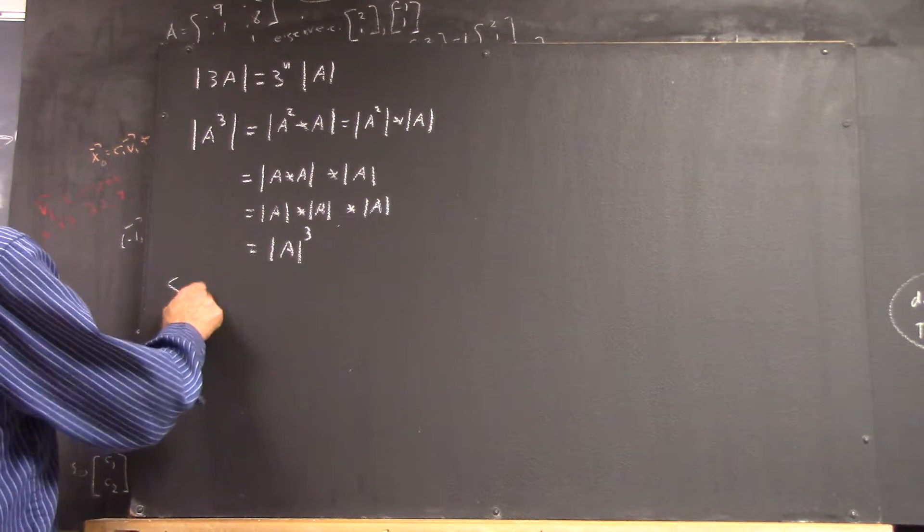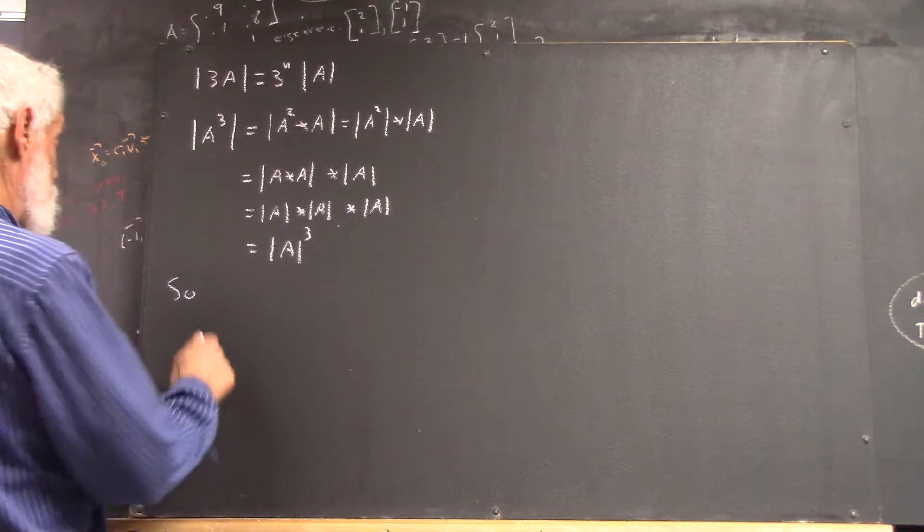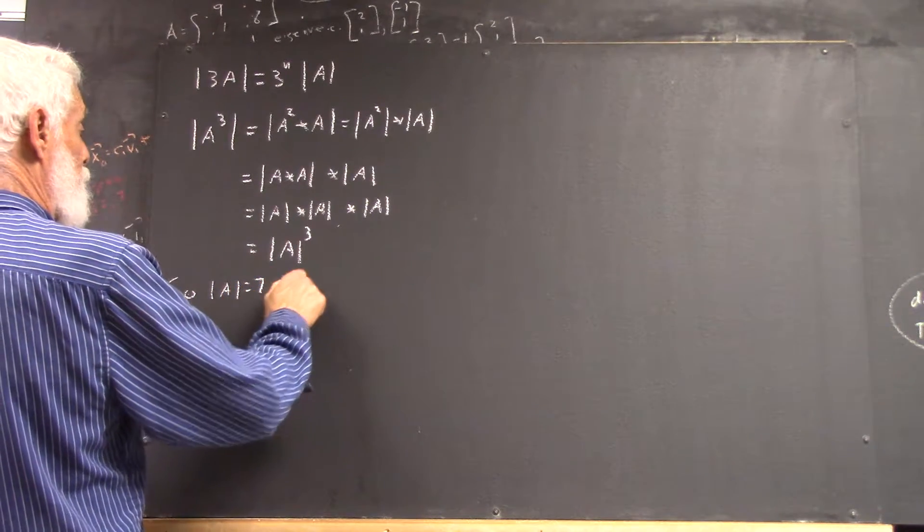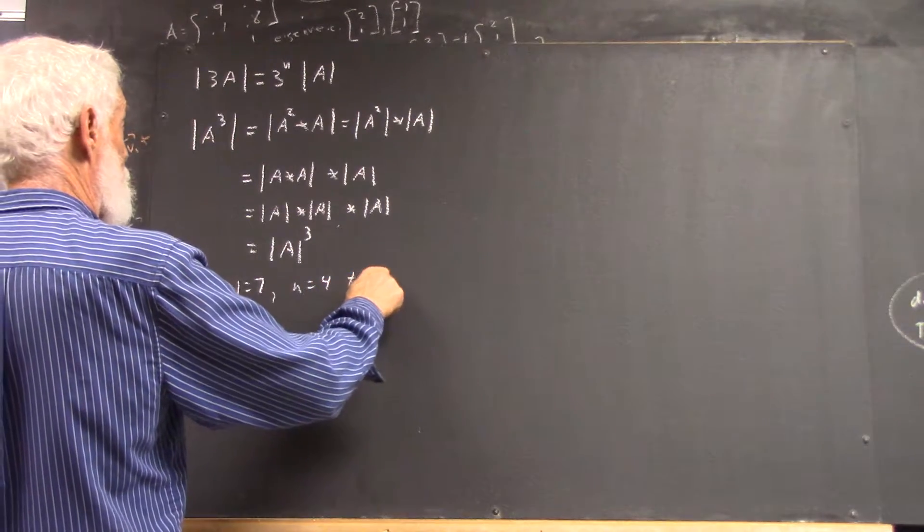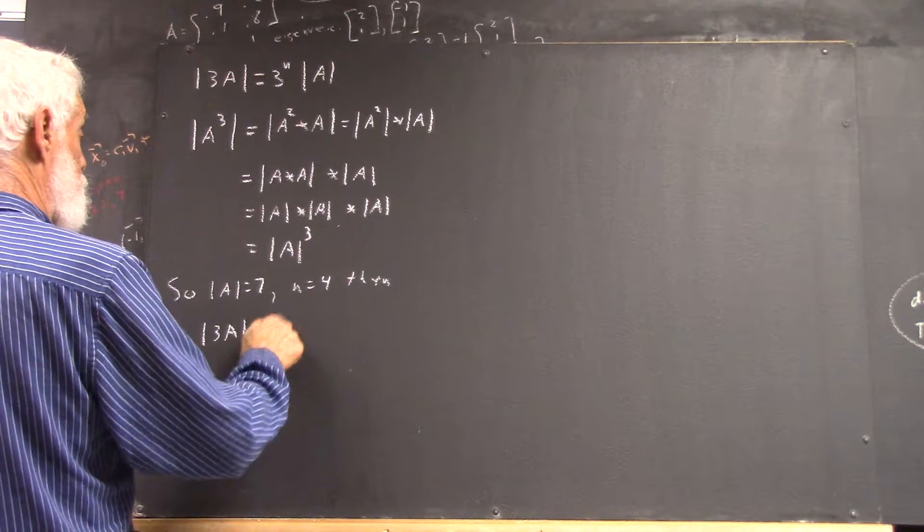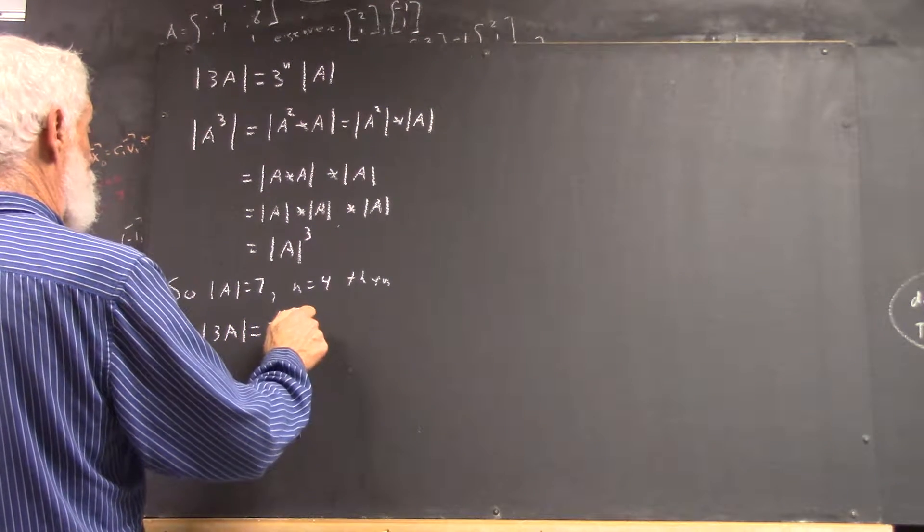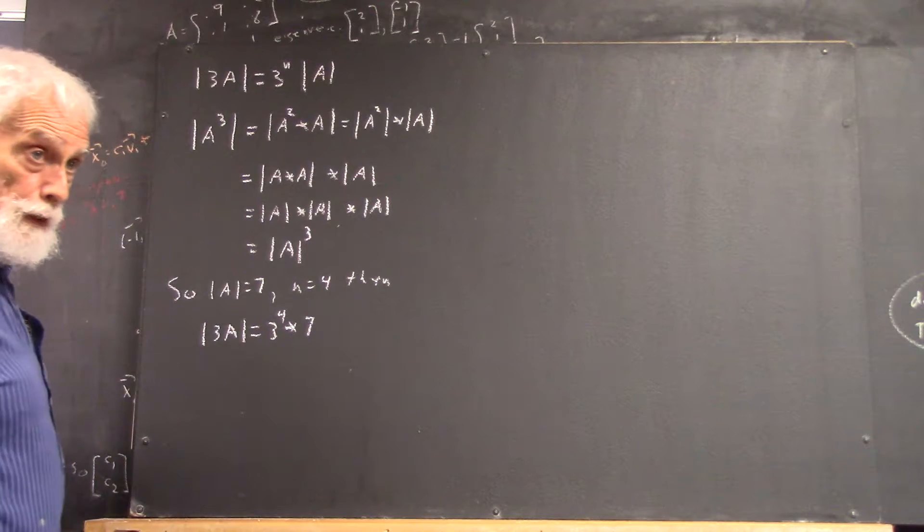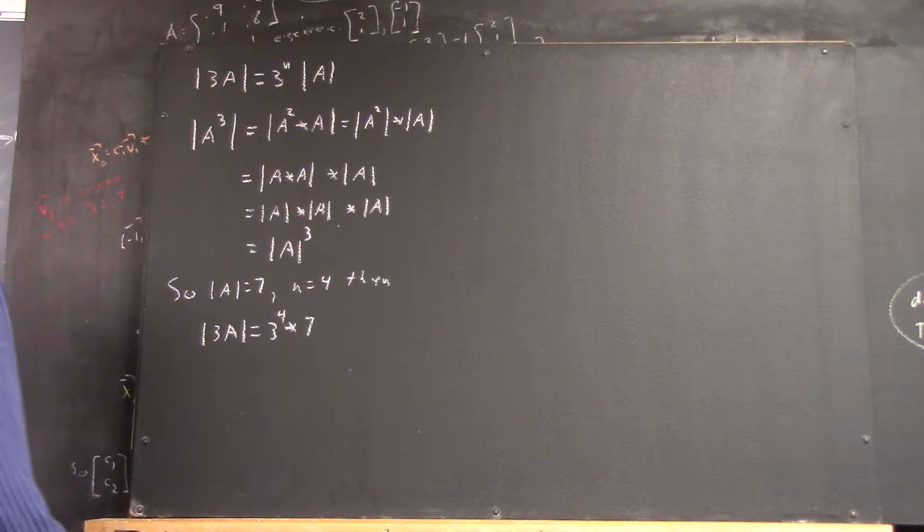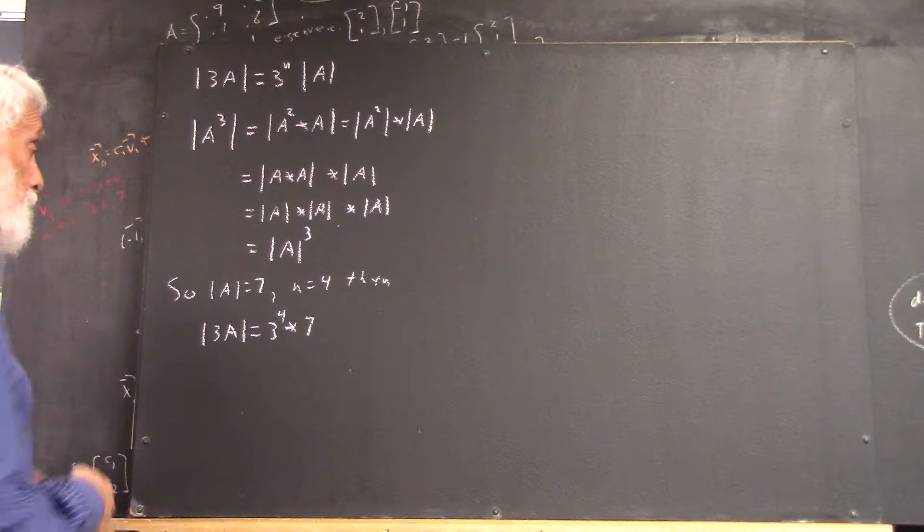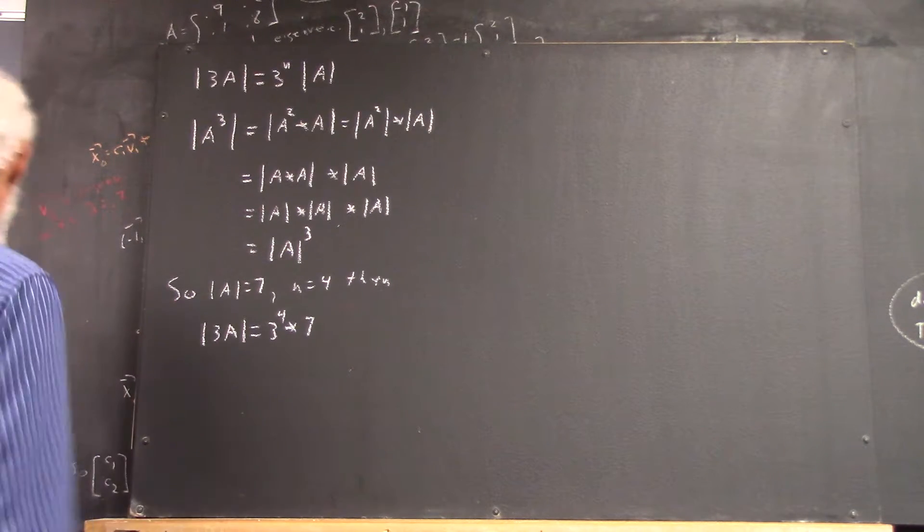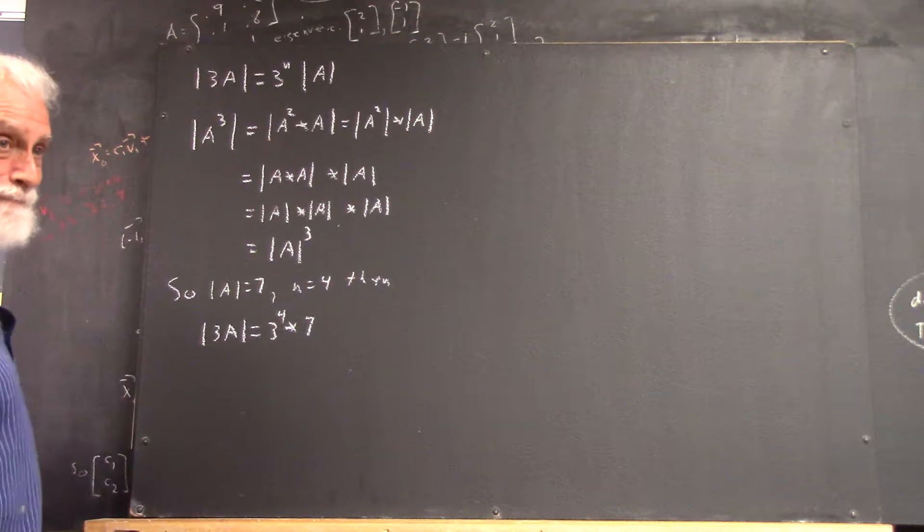In the case of a problem in the chapter review test, if the determinant of A is 7 and n equals 4, that's 81 times 7, 567.